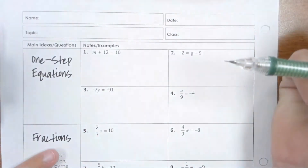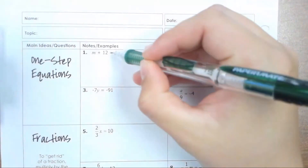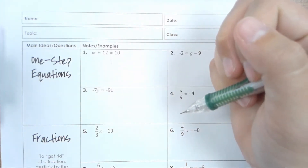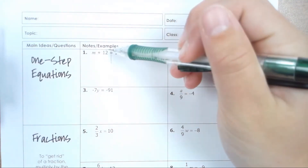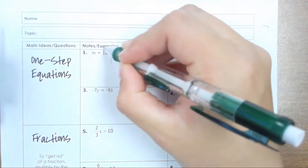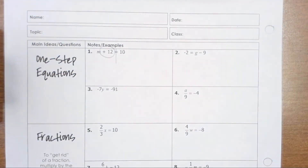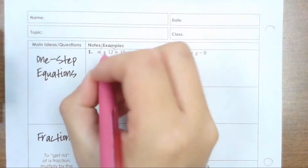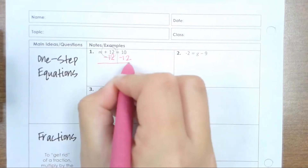We are doing inverse operations. To move something to the other side of your equal sign, you have to do the opposite of whatever operation it is doing. For example, we have the equation with variable m, and if we want to get the variable by itself we have to move the plus 12 over to the other side. To move it, we have to do the inverse operation of adding, so the opposite of adding is subtracting. My one step is to subtract 12 from both sides of my equal sign.